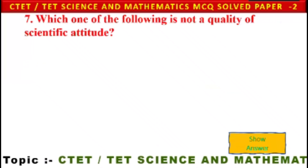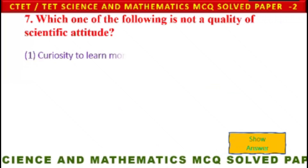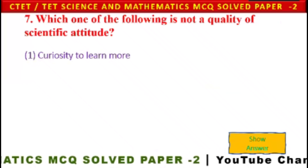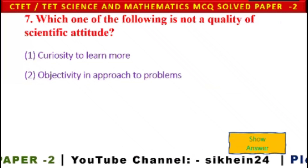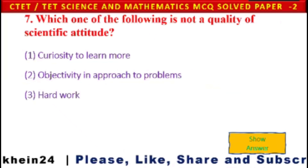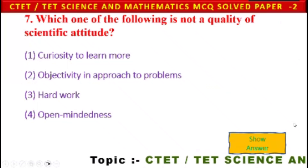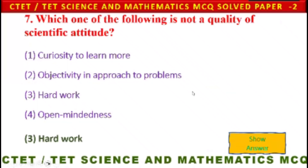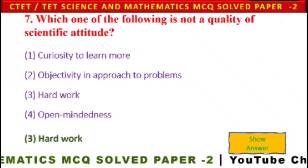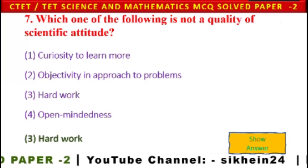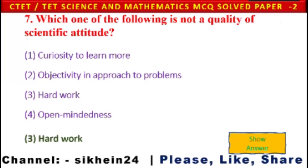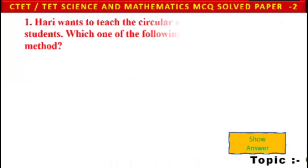Next question: Which one of the following is NOT a quality of scientific attitude? Options: 1) Curiosity to learn more, 2) objectivity in approach to problems, 3) hard work, 4) open-mindedness. The appropriate answer is option 3 — hard work is not a quality of scientific attitude.